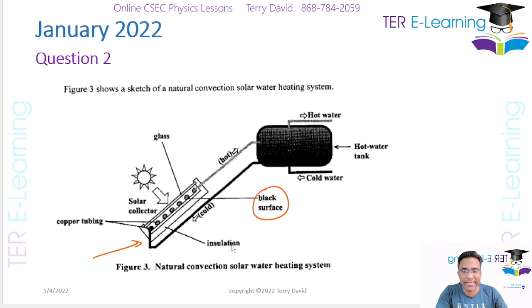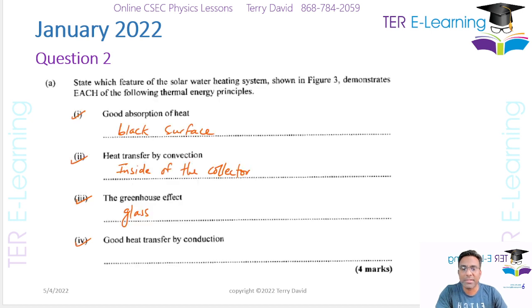The next one is heat transfer by conduction. If you notice in the design, you have copper tubing. Copper metal is a good conductor of thermal energy, so the answer here is the copper tubing. We get one mark for each of these.